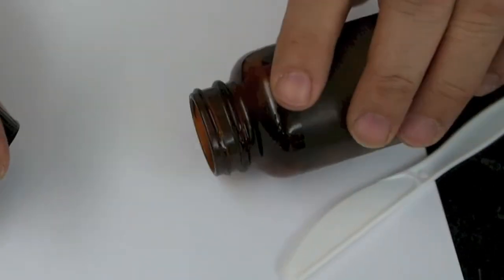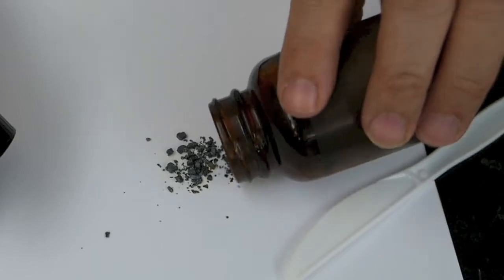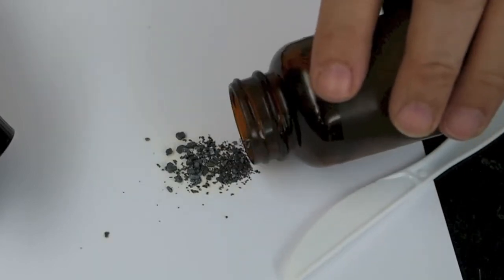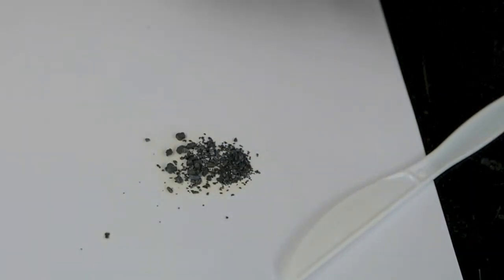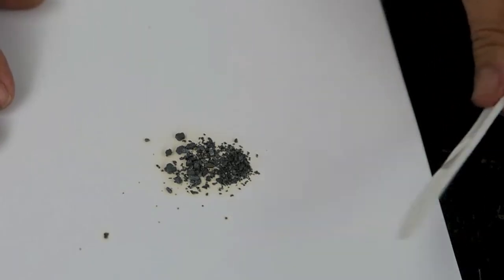I want to start by taking a look at some iodine crystals. I'll put some on the paper here, and as you can see they're very small. They have a metallic look to them, but they're definitely a non-metal.